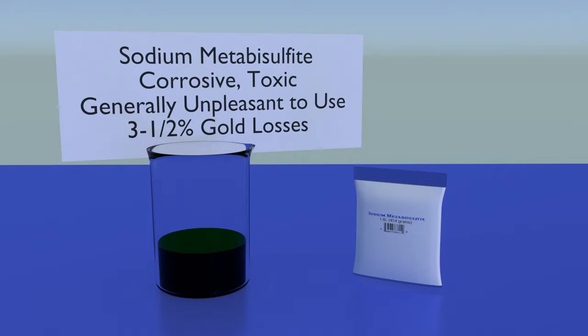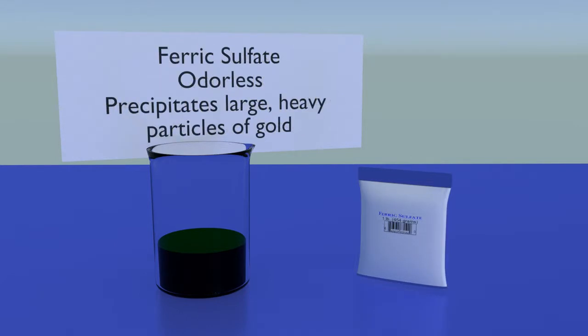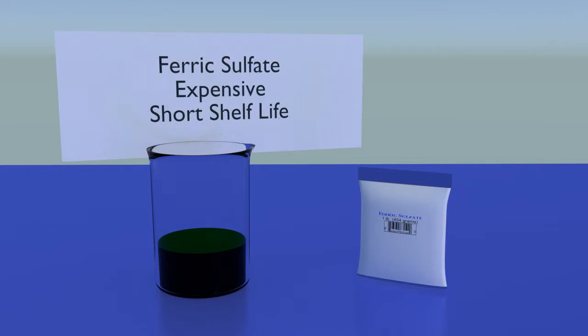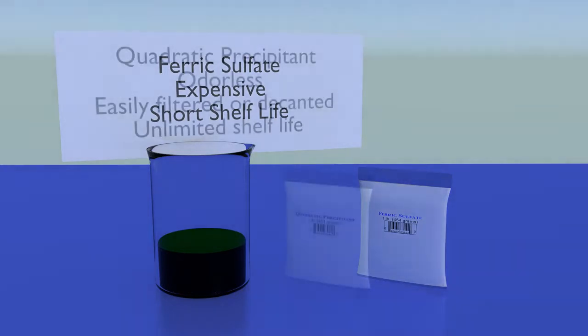Ferric sulfate: this is a relatively unknown precipitant but it has excellent qualities. It has no odor and it precipitates large heavy particles of gold. These particles are easily recovered with no losses by either filtering or decanting.